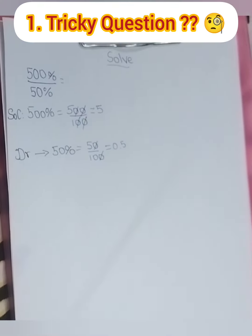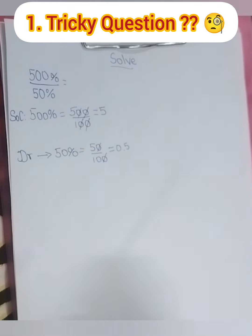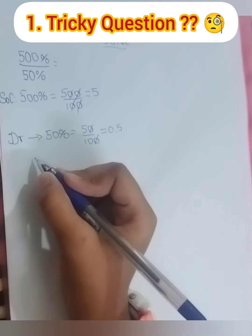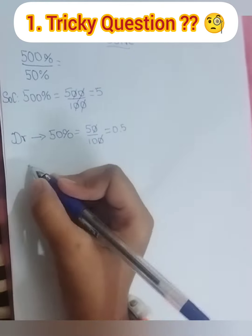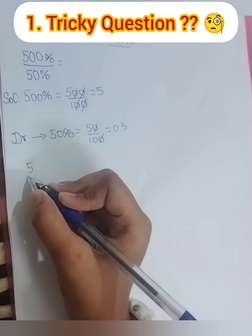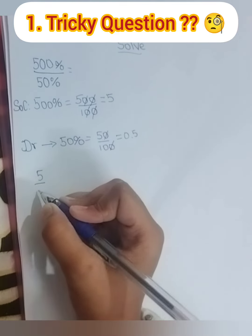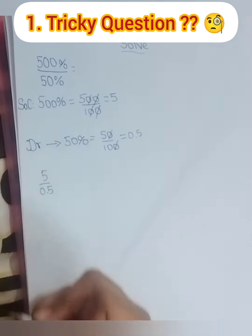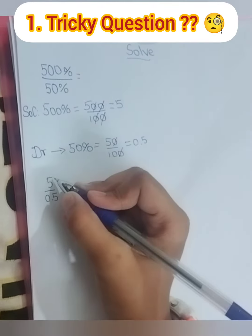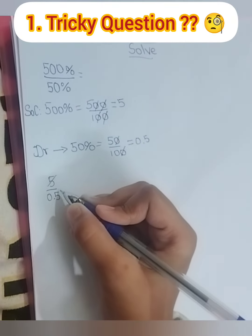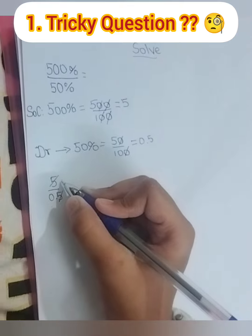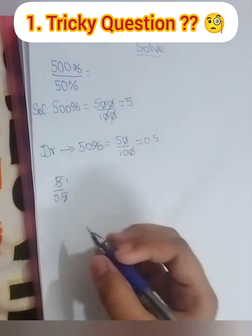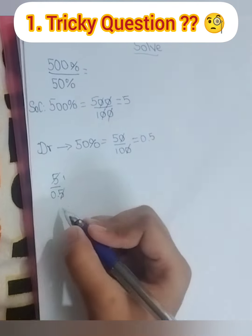This becomes 0.5. Now let's solve the problem. For the numerator we have got 5, for the denominator we got 0.5. Now let's cancel it: 5 divided by 5 is 1.